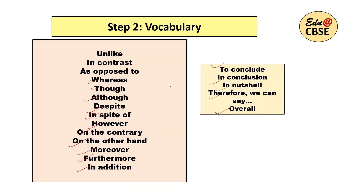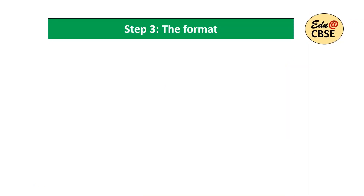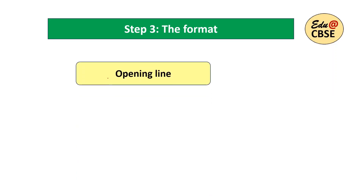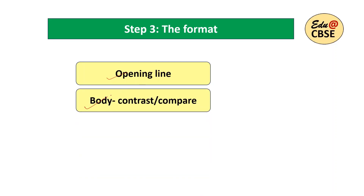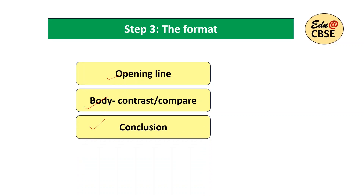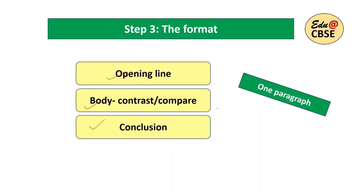Step three is the format. The format is very simple: there should be an opening line — the beginning line is already given in the question. Then comes the body where you will compare and contrast. Then there should be a conclusion — again given in the question, but you can use your own opening line and your own conclusion. One very important thing: it should be written in one paragraph — do not make different paragraphs.